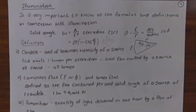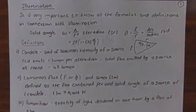Good morning. This is another chapter on illumination. It is very important to know and understand all the formulas and definitions in connection with illumination. If we look at the solid angle, omega is equal to A divided by r squared, where A is the area and r is the radius. That becomes 2π(1 − cos(α/2)).